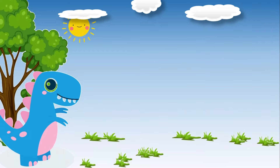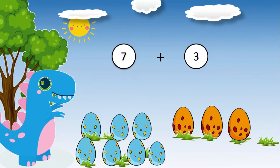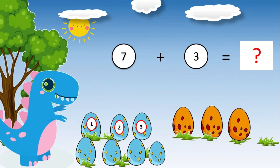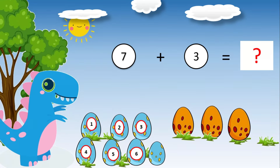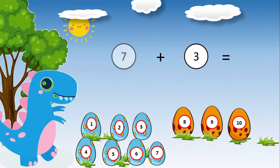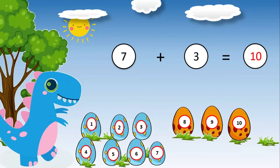Seven dinosaur eggs plus three dinosaur eggs is equal to what? Do you want to know the answer? Let's add one, two, three, four, five, six, seven, eight, nine, ten. Seven plus three is equal to ten.